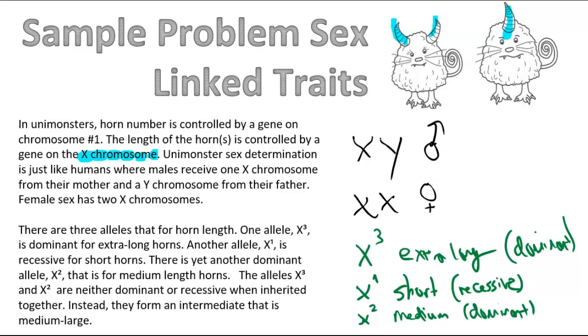Now, since you have two that are dominant, that means you have incomplete dominance, and you have an intermediate form. So X with a superscript 3, X with a superscript 2, is actually going to be medium-large. So it's in between the medium and the extra long.